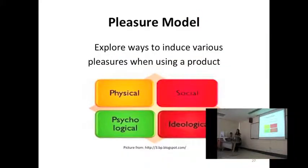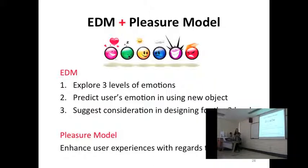So, there's actually another model which works well with EDM. It's the pleasure model which I will not go into details because the next group will be doing it. So, a general idea of this is that it helps designers to explore ways to induce various pleasure in four areas when using a product. The four areas is mainly physical, social, psychological, and ideological. So, when you put these two models together, it complements each other. As pleasure model enhances user experience, it actually helps you to understand the structure of the three levels of emotions. This will help you predict users' emotion when they are using your product. And it also allows you to be clear of the consideration you have when designing for the three levels.